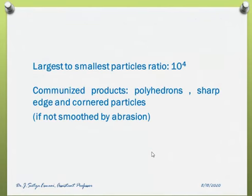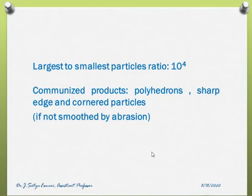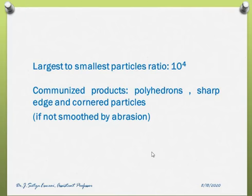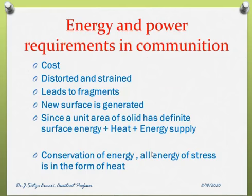Regarding the feed to product ratio, the feed will be the largest size and the product will be the smallest size. The largest to smallest size ratio is generally 10 to the power of 4. Different comminuted products can be seen — such as polyhedrons, sharp-edged, and cornered particles. Depending on the requirement — for example, in mirror processing industries, sharp or needle-like particles are produced — the processing will take place accordingly.